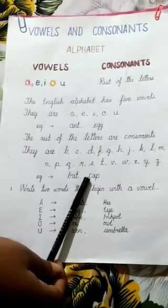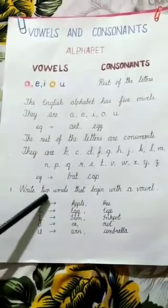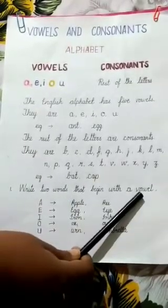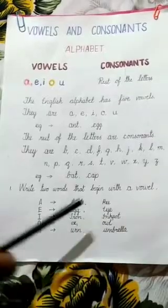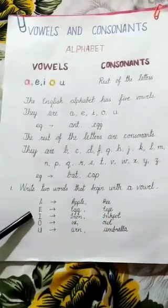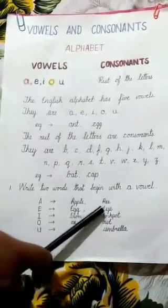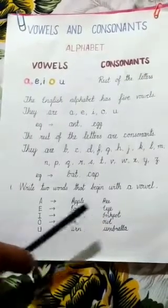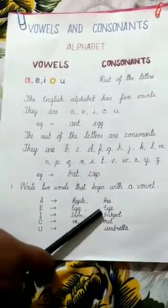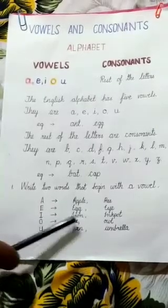For your homework, write any two words that begin with a vowel. A for apple, E for egg, I for iron and ink pot, O for ox and owl.